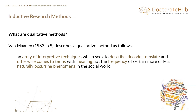Van Maanen described qualitative methods as 'an array of interpretive techniques that seek to describe, decode, translate, and otherwise come to terms with the meaning — not the frequency — of certain more or less naturally occurring phenomena in the social world.' At the heart of that is: when we go into organizations, can we codify and measure what's going on?